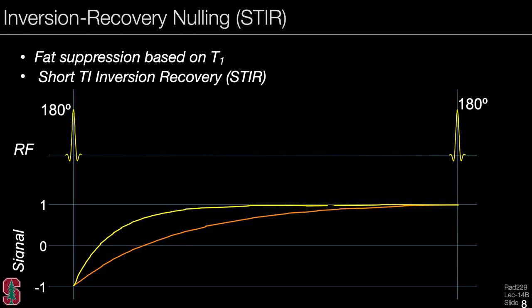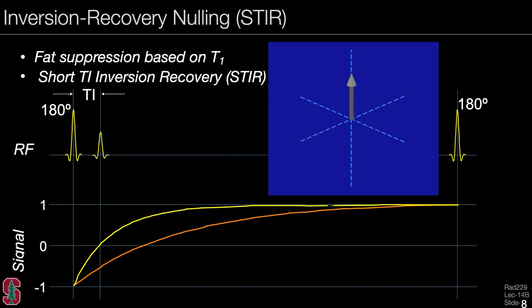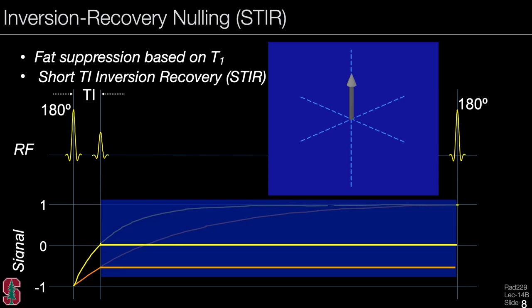Another very common approach to magnetization preparation is inversion recovery, often used for nulling, such as in the STIR approach—short TI inversion recovery, sometimes called short tau inversion recovery. We start the sequence with a 180-degree inversion, and the signals recover with different T1 values. We then excite at the null point for whatever tissue we want to null—in this case, fat. So we excite when that trace passes through zero, giving us a short inversion time. Ideally, the fat signal has been nulled. This is another form of fat suppression based on the T1 difference between fat and other tissues, though we also lose some SNR from other tissues.